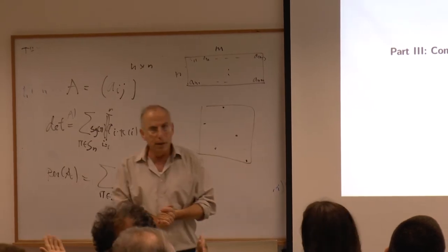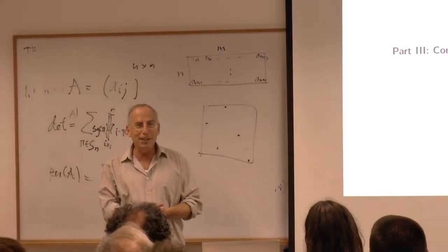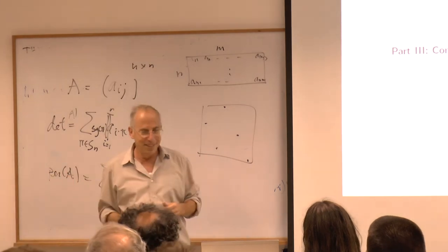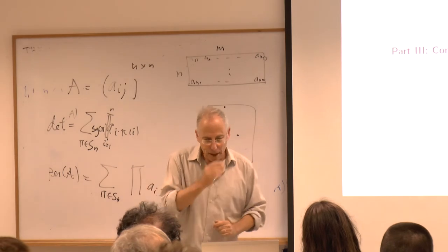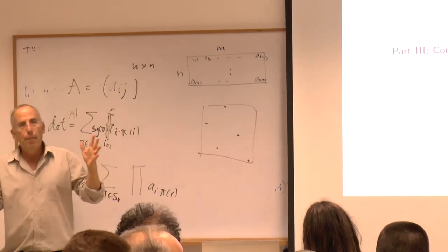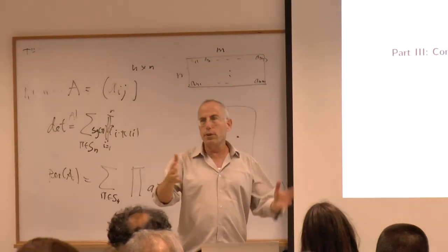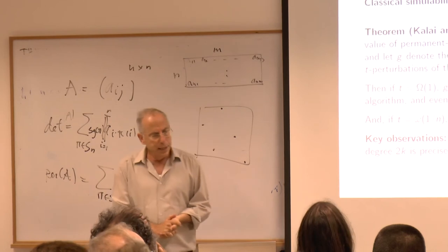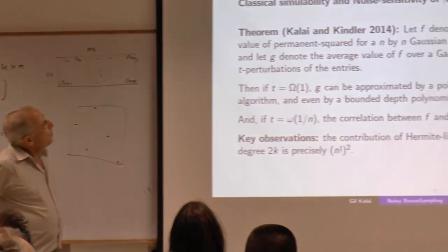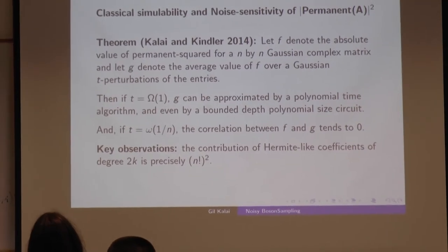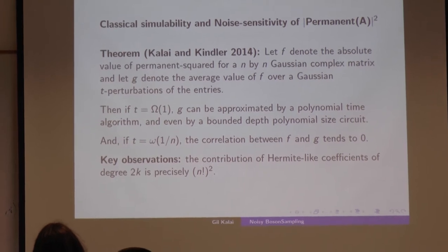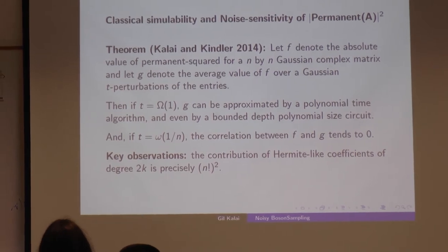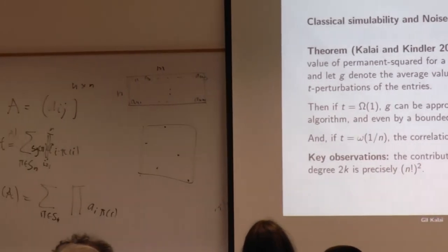Now the main result with Guy. The boson sampling is sampling according to an exponentially large vector where the entries are the absolute value squared of the permanent. This theorem deals with a single entry. Let F denote the absolute value of the permanent squared for an n-by-n Gaussian complex matrix. Let G denote the average value of F over a Gaussian perturbation of the entries — we take the matrix, add some additional Gaussian noise, and take the average of the absolute value squared.